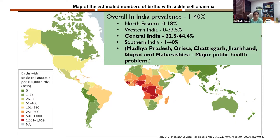This background information is important, particularly for hemoglobinopathies, because there are regions in the country where certain variants are more prevalent. Sickle cell is more prevalent in central and southern India, HbE in the eastern parts, and HbD Punjab in the western side. When you deal with a patient, the area from which the patient comes is an important component of history, and you should know what hemoglobinopathies are prevalent in those areas.